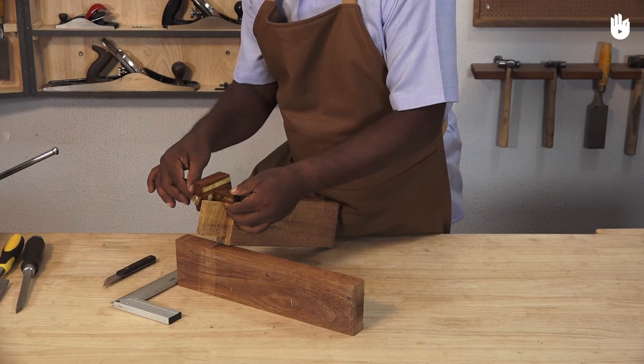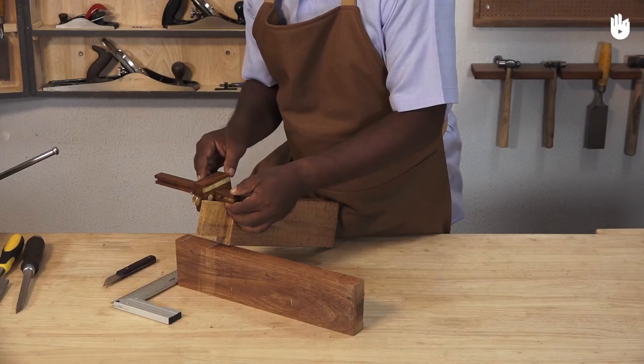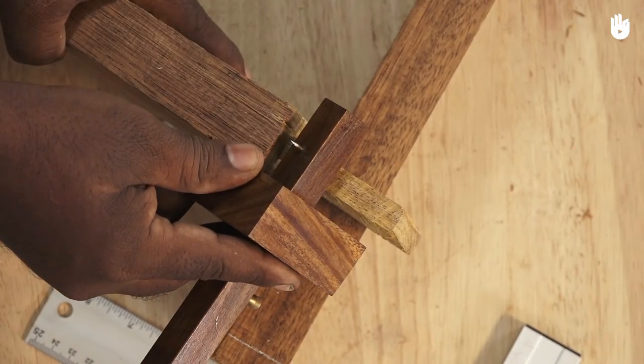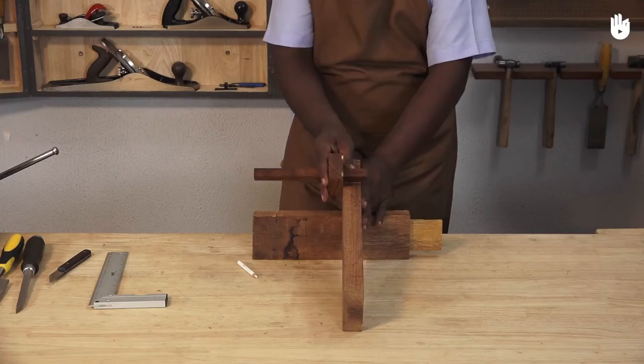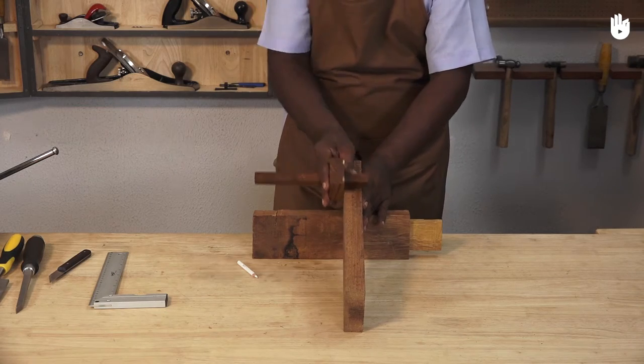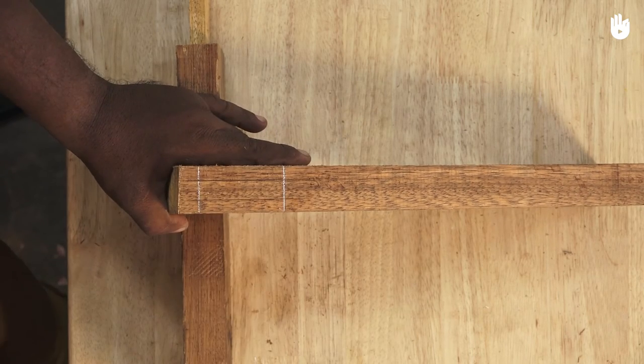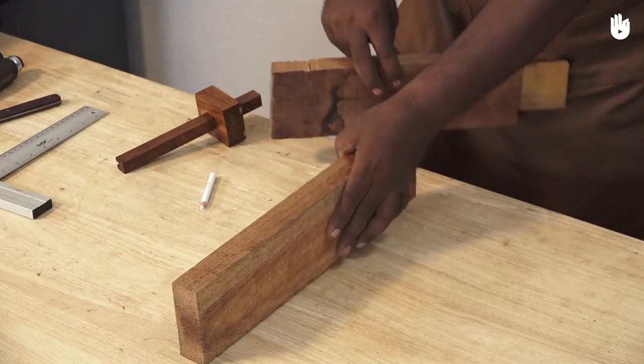Set the scribes of the mortise gauge to the thickness of the tenon which should also follow the thickness of the mortise chisel. Centre the scribes on the workpiece and mark the width of the mortise by running the two scribes between them.